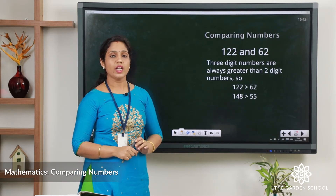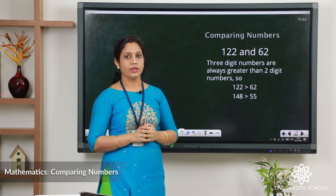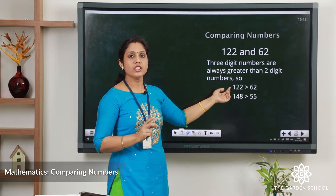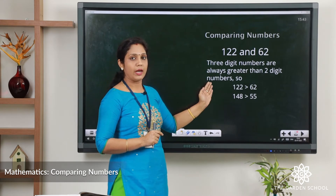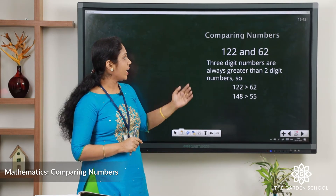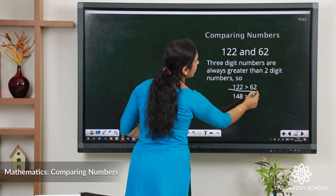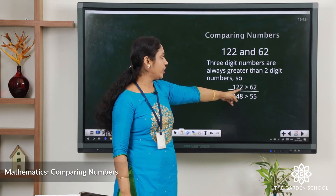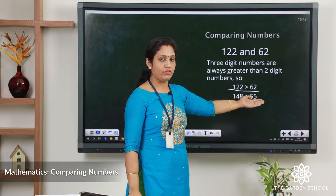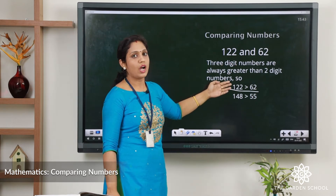Now let's compare 122 and 62. 122 is a 3-digit number because there are 3 digits, and 62 is a 2-digit number. When we compare a 3-digit number and a 2-digit number, the 3-digit number is always greater. So 122 is greater than 62. Similarly, 148 is greater than 55 — 148 is a 3-digit number and 55 is a 2-digit number.